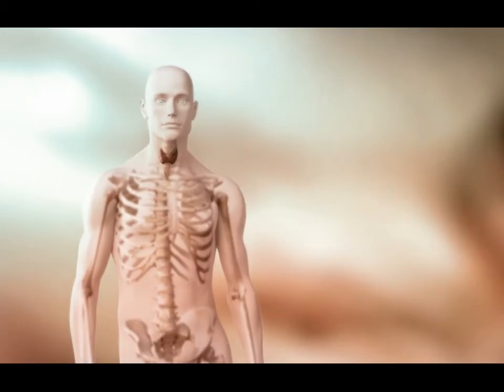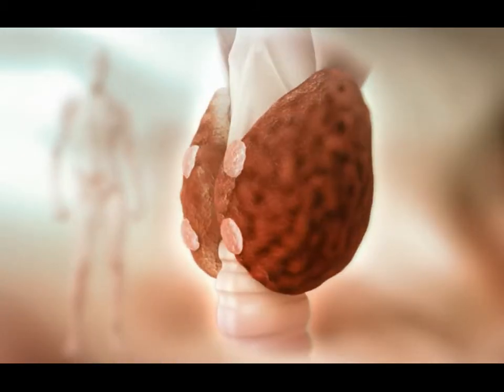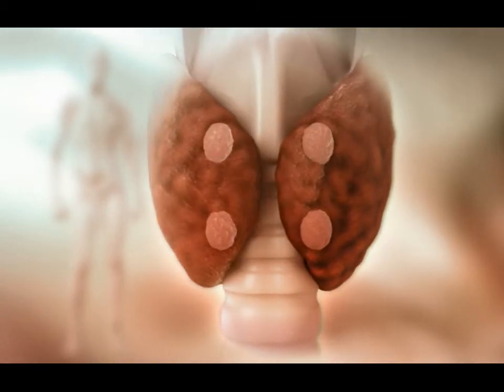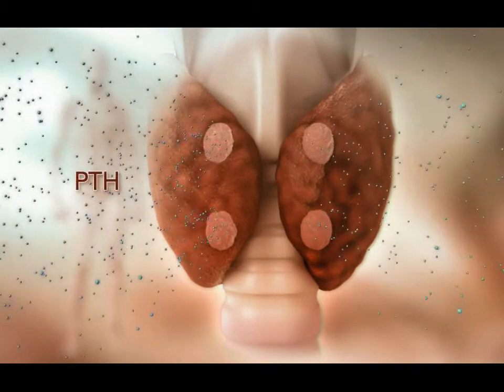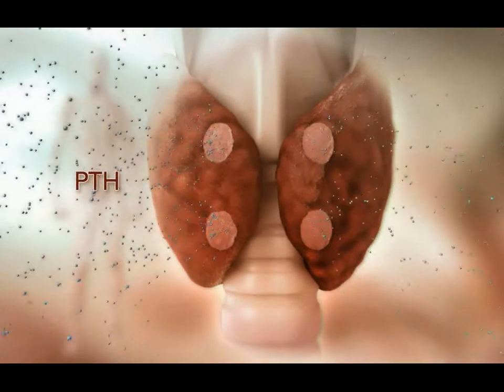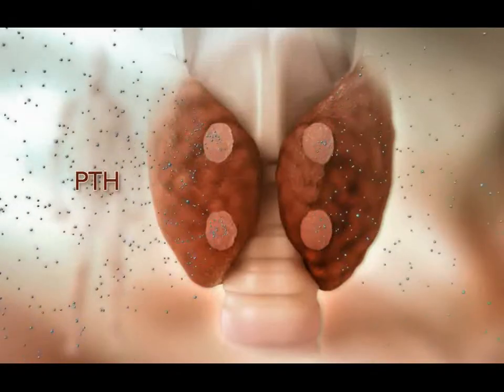The parathyroid glands produce and secrete PTH, which is the main regulator of serum calcium. It's important to remember that parathyroid gland function has two distinct regulatory pathways.